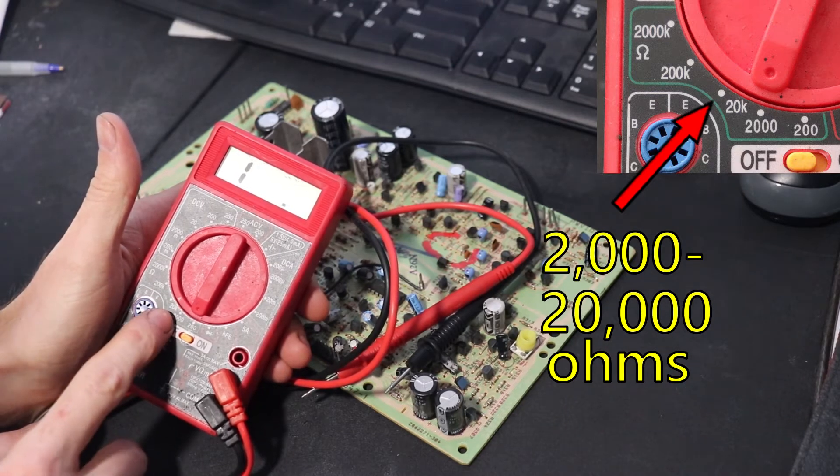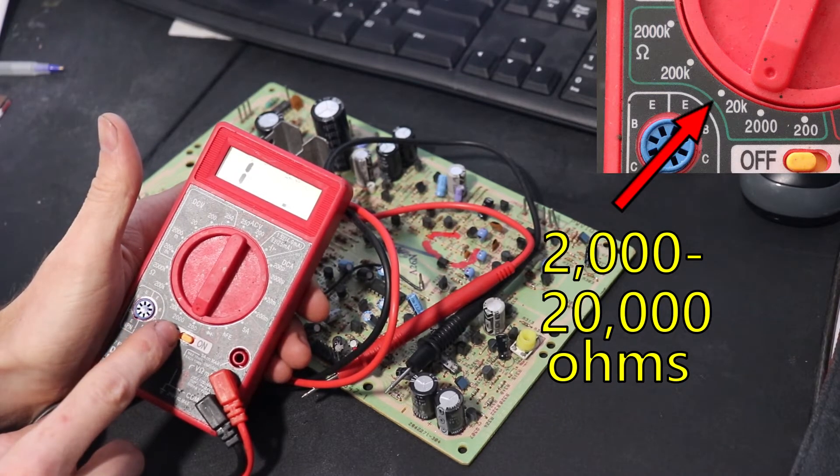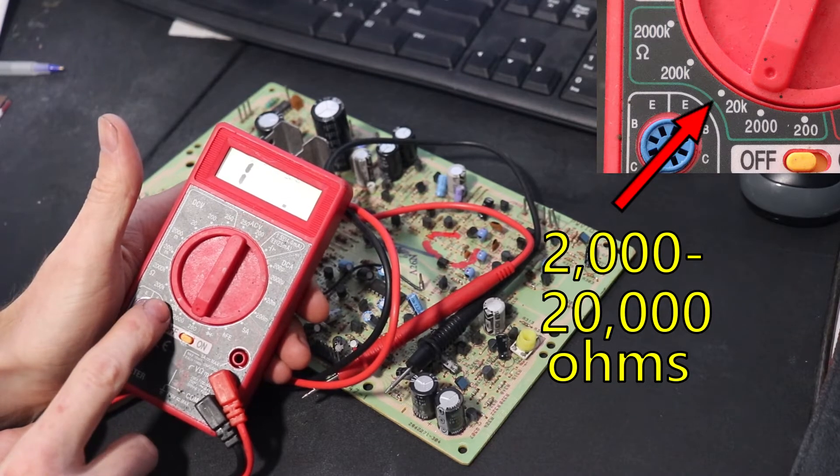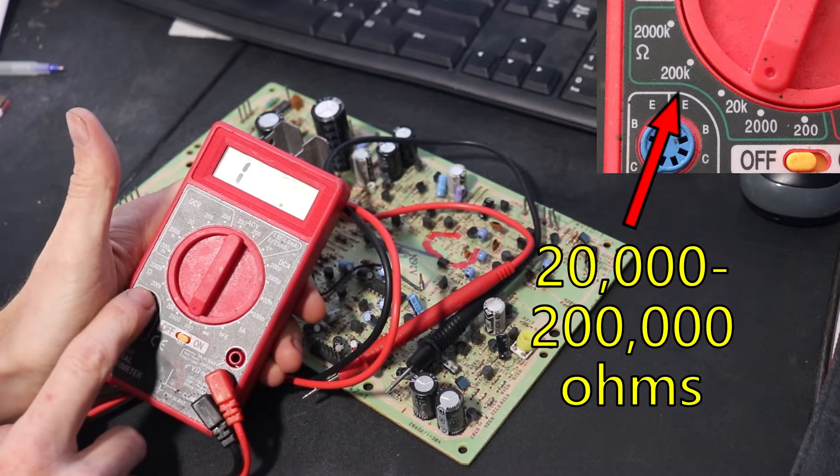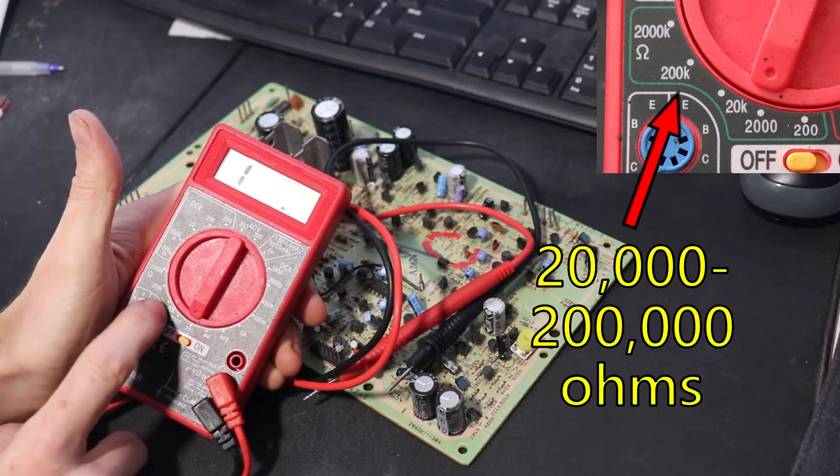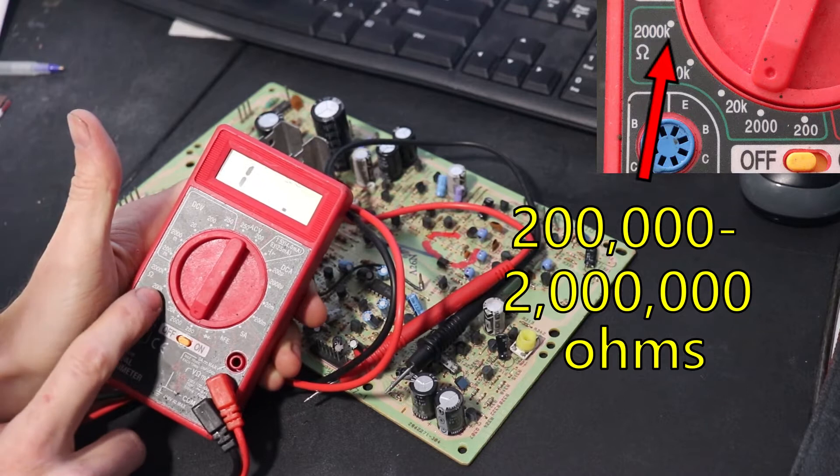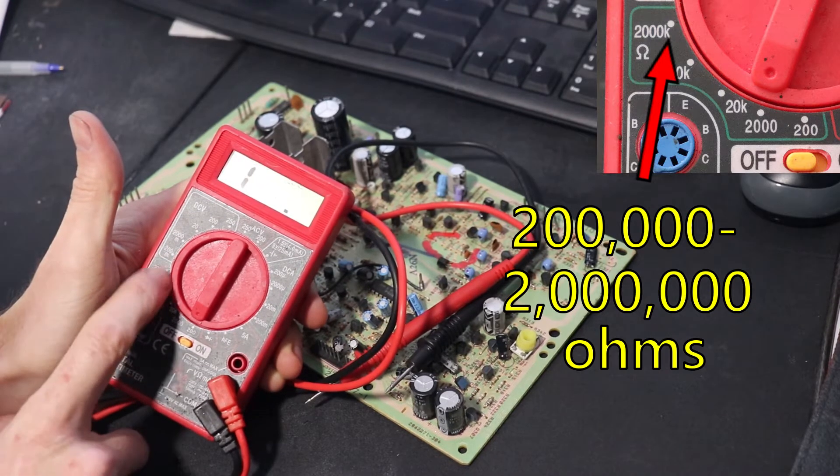20k, so 20,000 to 2,000 you want to go with that range right there. Anything above that up to 200k go with that range. And up to 200,000 ohms go in between these two.